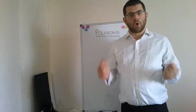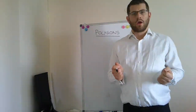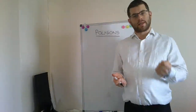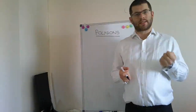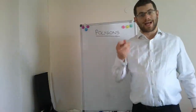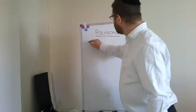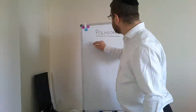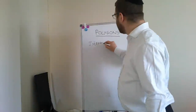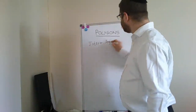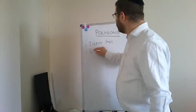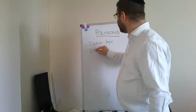Now when we talk about a polygon, the main ideas we're going to discuss today are something called interior and exterior angles. That's the next thing you need to write down — an interior angle and an exterior angle.